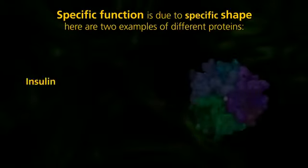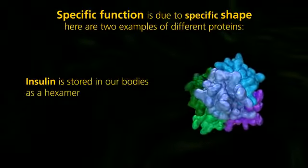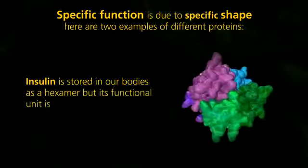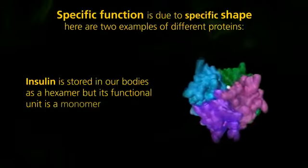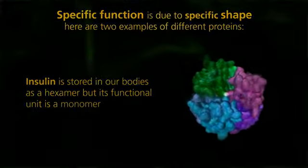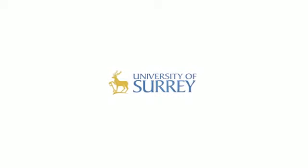Insulin is another example. It is stored in our bodies as a hexamer, but its functional unit is a monomer.